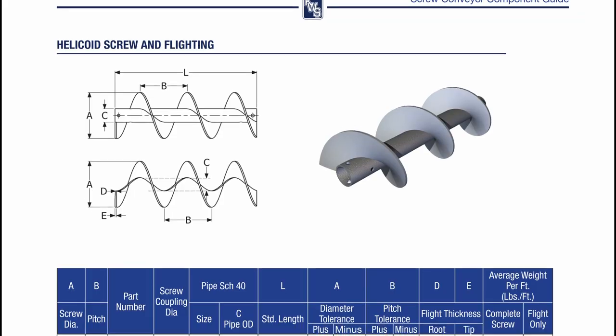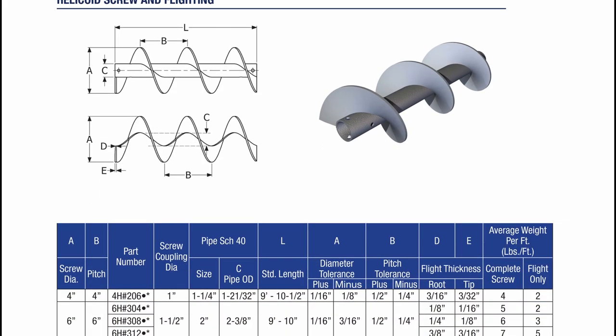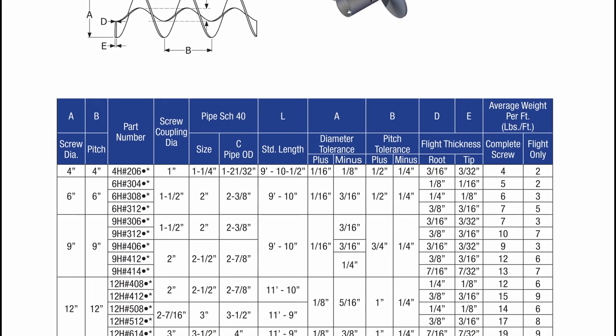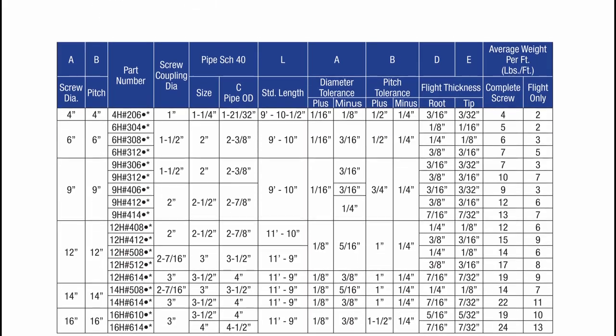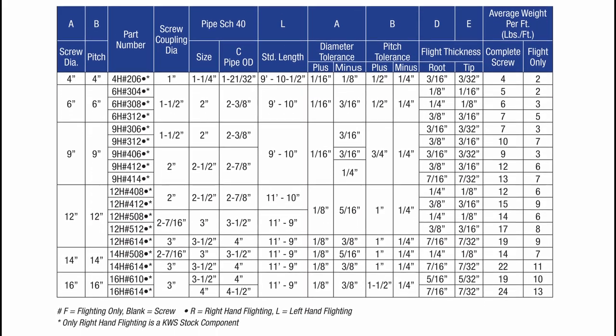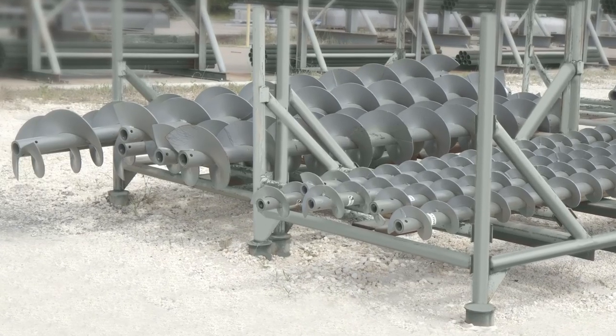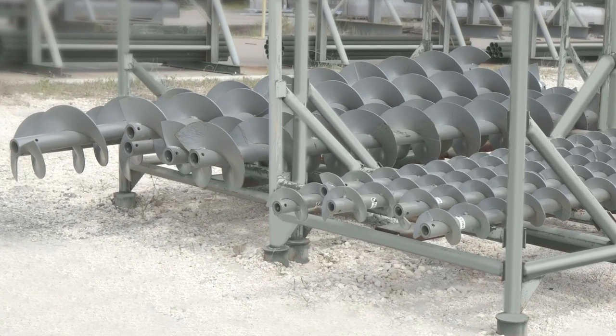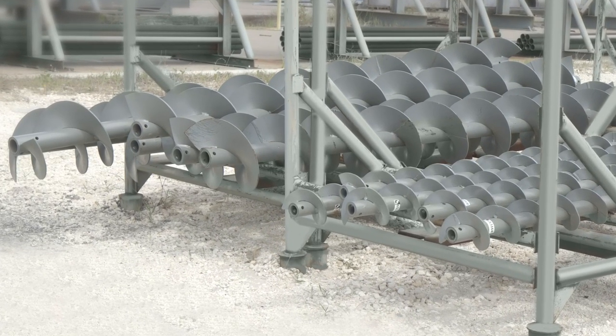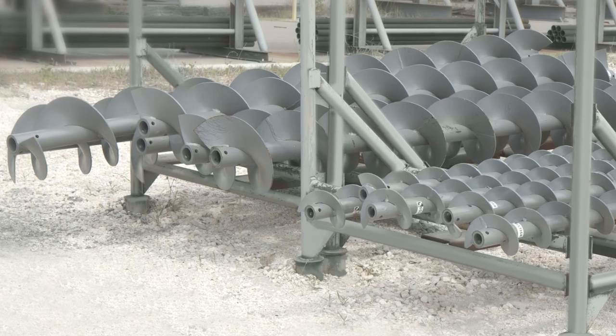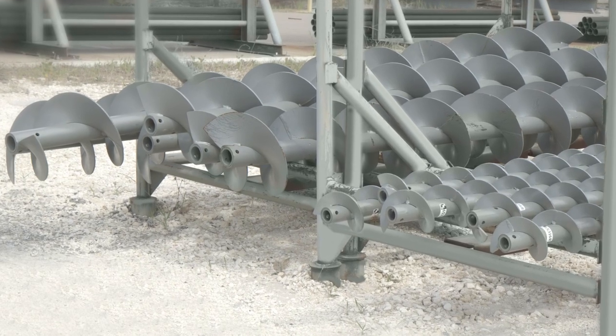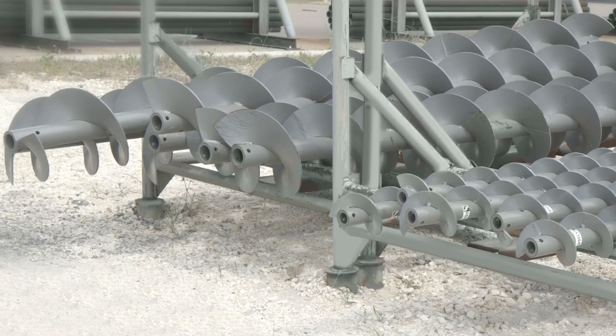Helicoid screws are available in SEMA standard sizes of 4 inch through 18 inch diameter. Helicoid flighting and screws are most cost-effective to produce, but are limited by SEMA standard sizes.